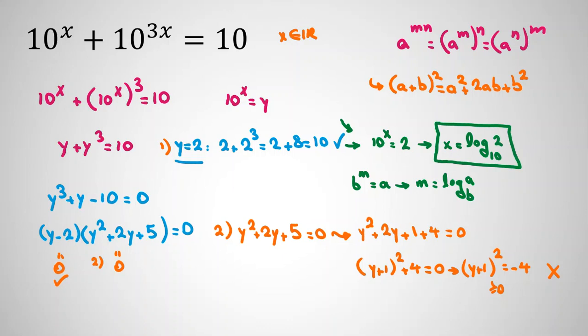Okay, as homework, you can solve another problem. Like for example, 5 to the 3x minus 5 to the x equals 6, and x is a real number. Try to solve this as homework and comment your answers right below this video.